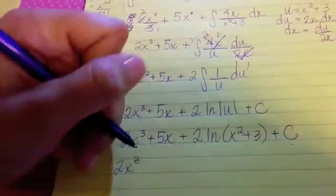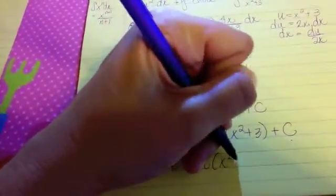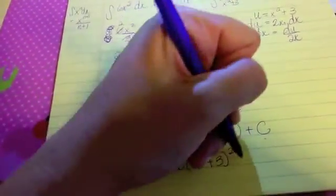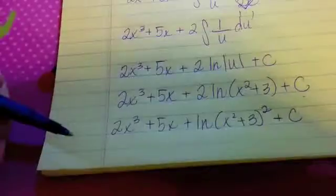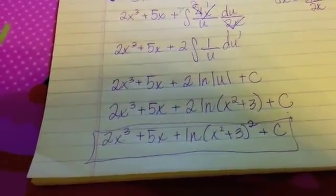And then you could even go ahead and change that to 2x cubed plus 5x plus the natural log of (x squared plus 3) raised to the second power, using the rules of logs. Remember that's going to be our final solution. Let me know if you have any questions, and I hope that helps you.